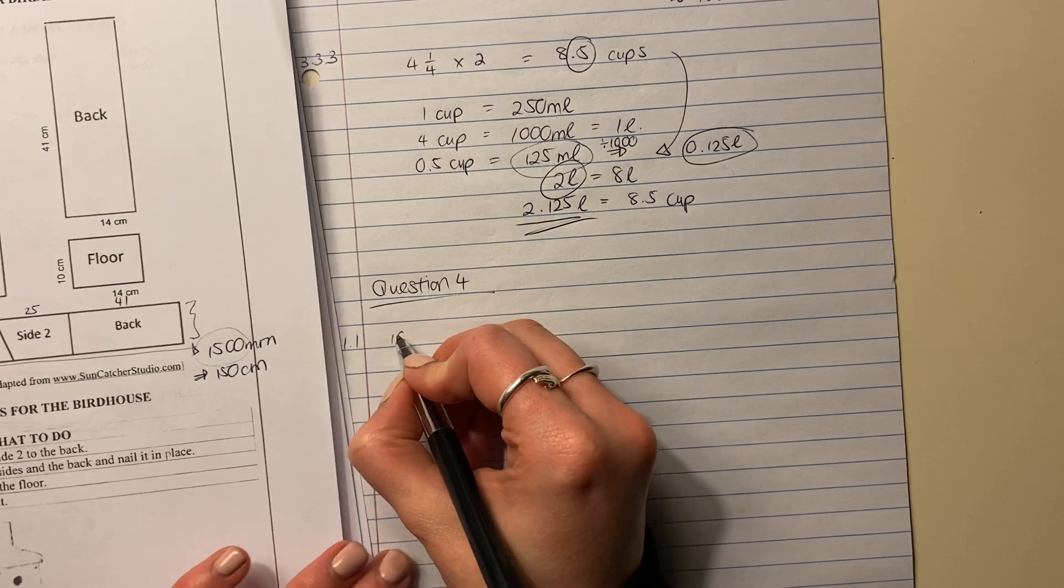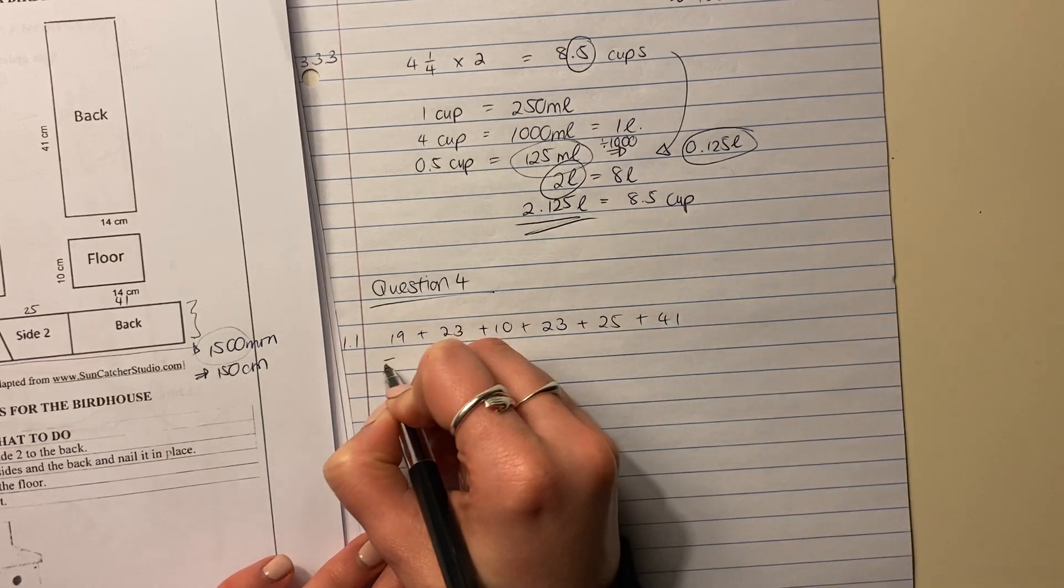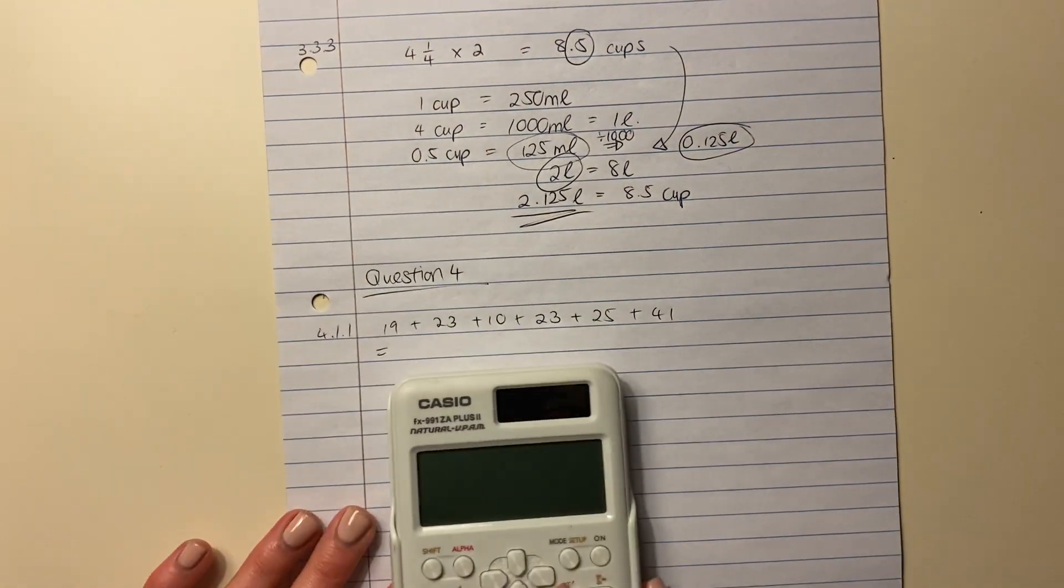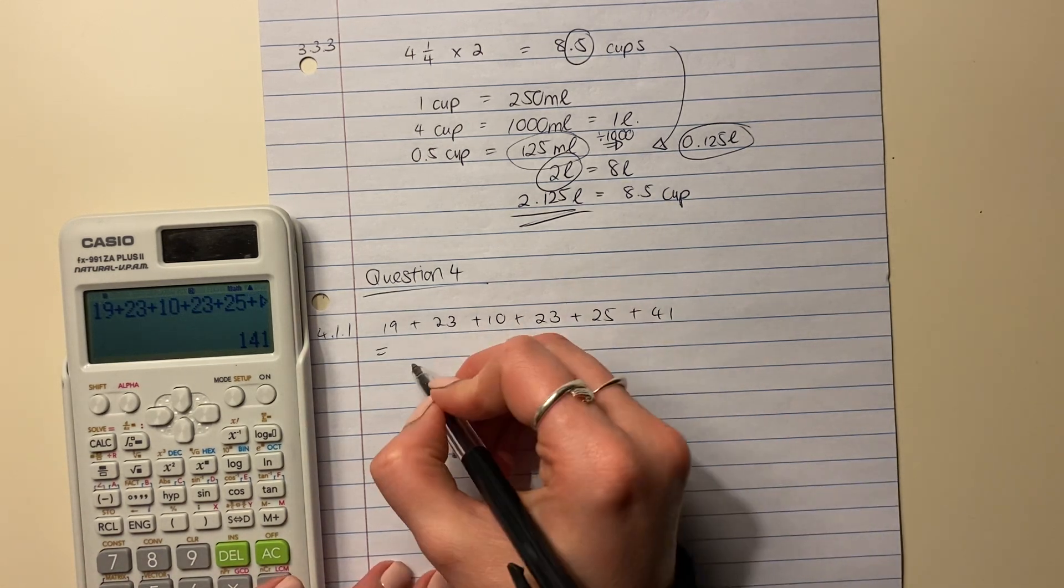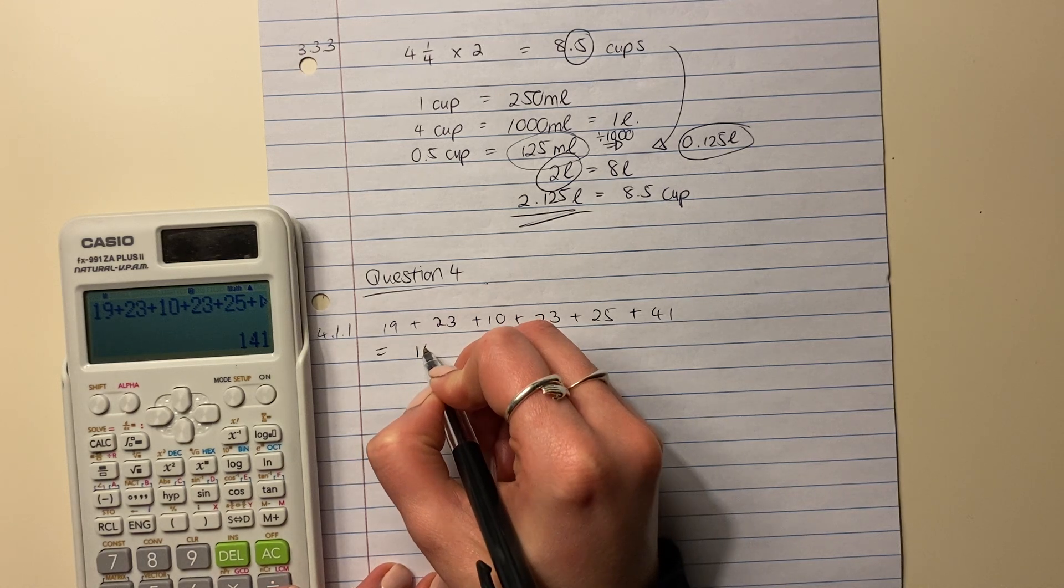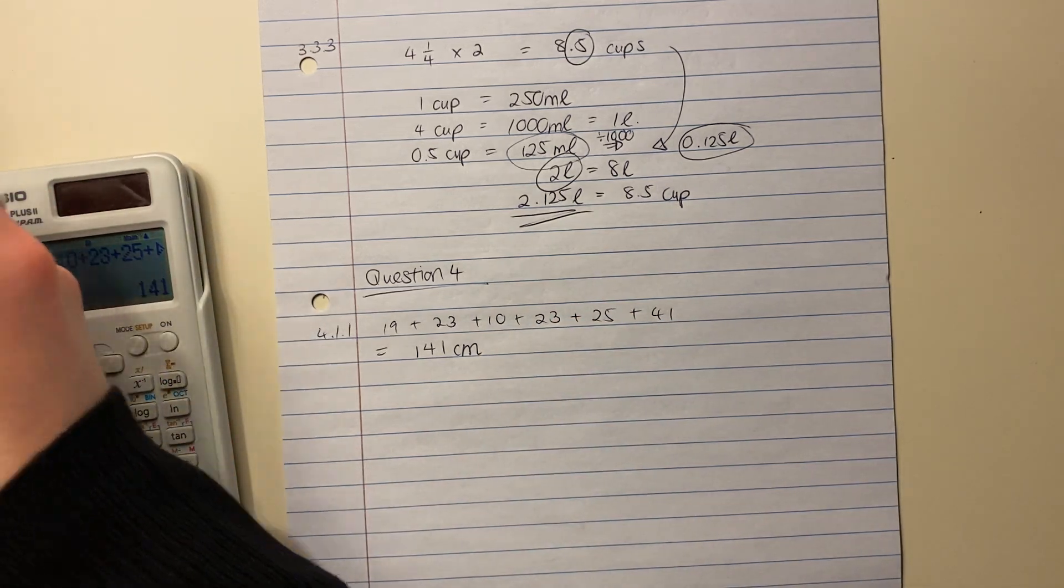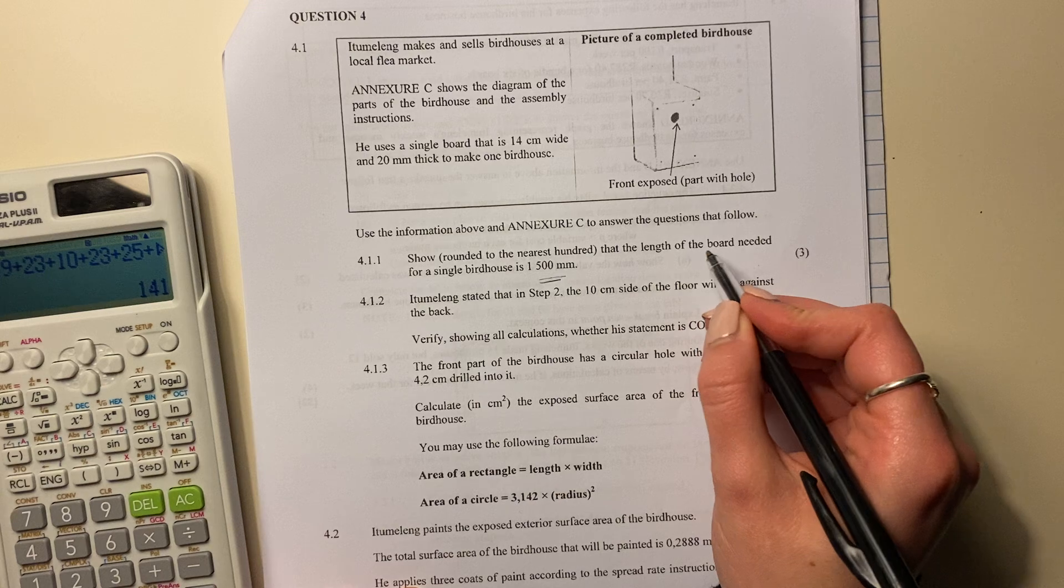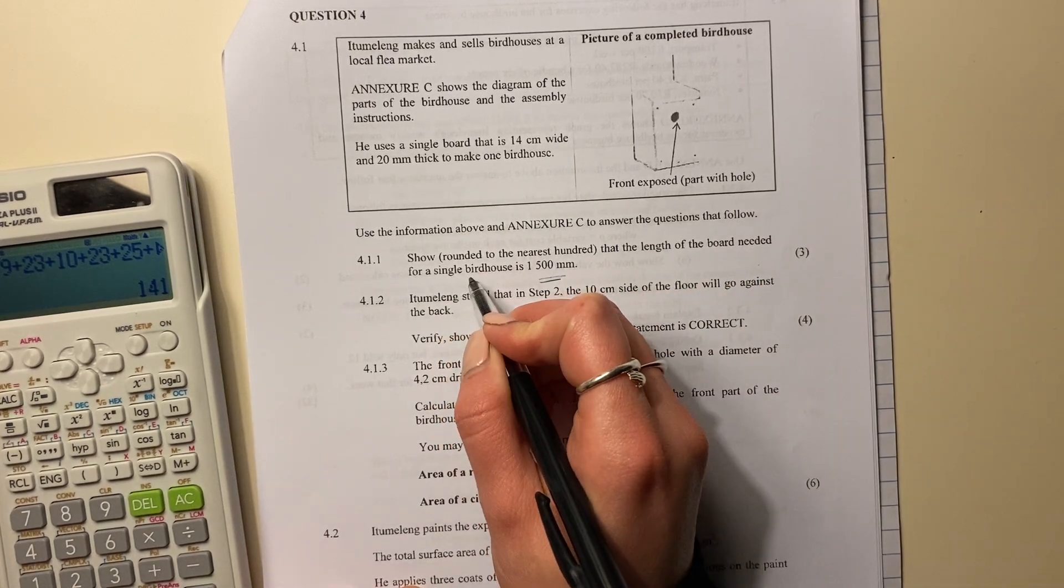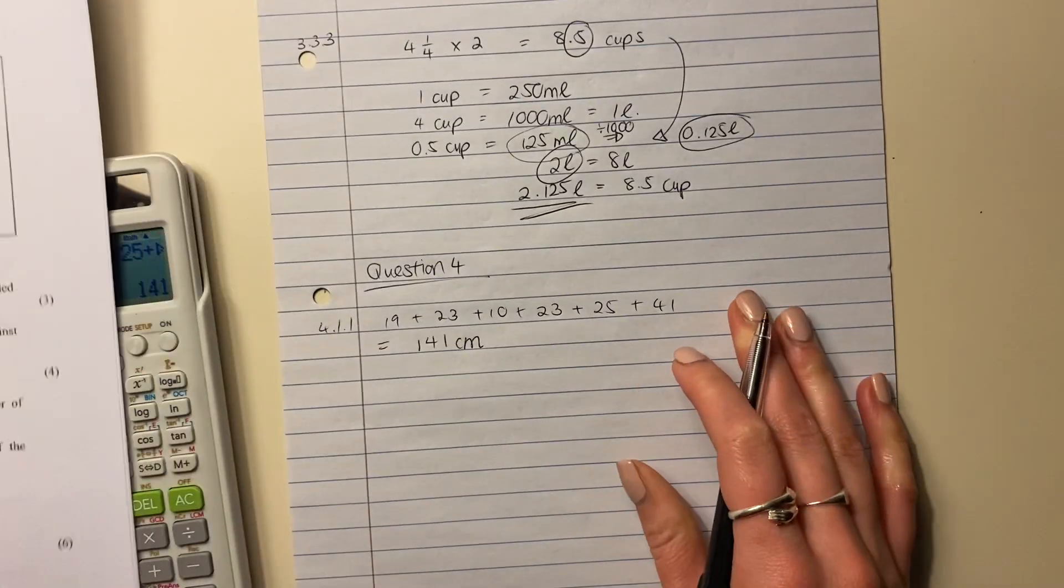So now we have that. Let's add that all together. So we're going to say 19 plus 23 plus 10 plus 23 plus 25 plus 41. It's all just calculated work. 19 plus 23 plus 10 plus 23 plus 25, excuse my inverter, is 141. And that's centimeters. So let's just go back to the question, and the question said, show, rounded to the nearest 100, that the length of the board needed for a single birdhouse is 1,500 millimeters.